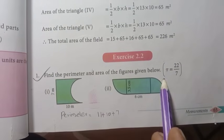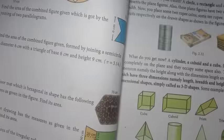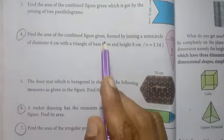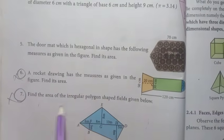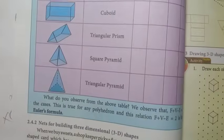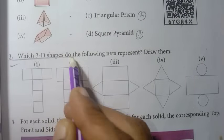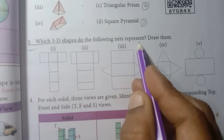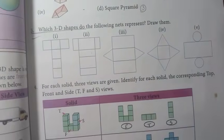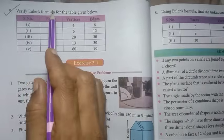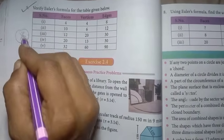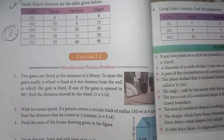On page 65, first one: find the perimeter and area of the figures, that's important. Second one, fourth one, six and seven. Next, page 71, practice which 3D shapes do the following nets represent and draw them. Then fifth one: verify Euler's formula for the table—this is very important. Fifth one will definitely have one question asked in the exam pattern.